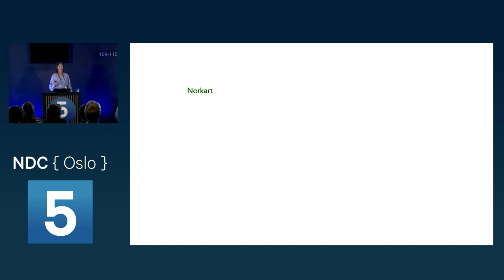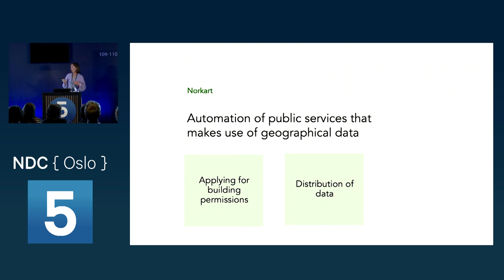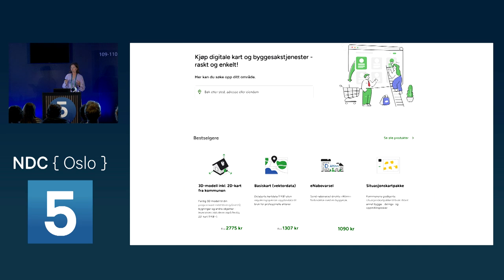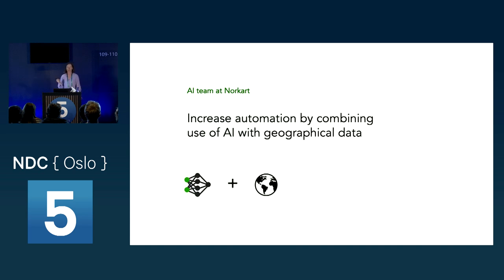Nordkart is a private software company with around 210 employees. Our focus is on automation of public services that make use of geographical data. We work with applications for building permits for engineers, architects, and normal citizens. We handle distribution of data including an online shop for geographical data like 3D models, and digital neighbor notifications. We also work on infrastructure for geographical data so it can be updated from municipalities to national datasets.